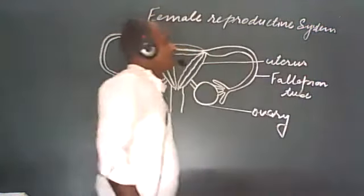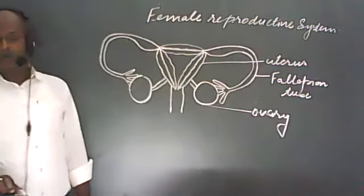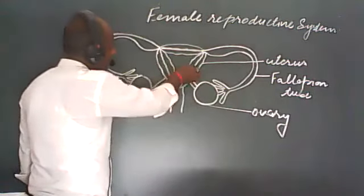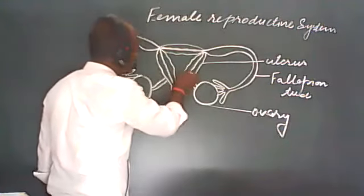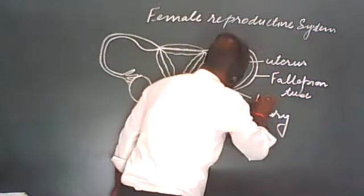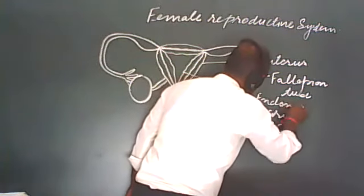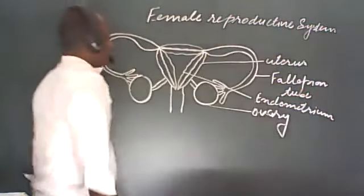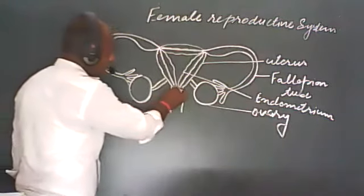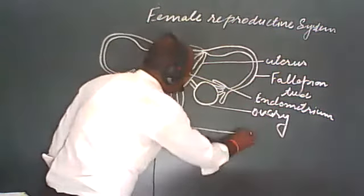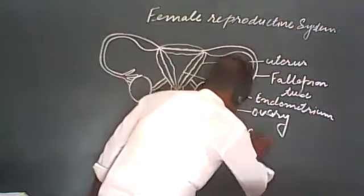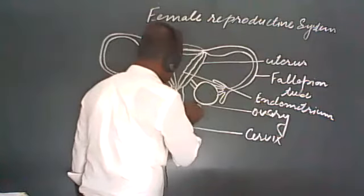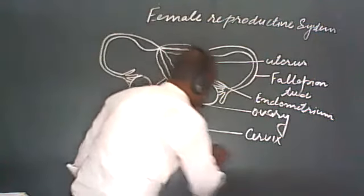If you see the structure of all these organs, the inside structure is called the endometrium. This portion is called the cervix, and this portion is called the vagina.